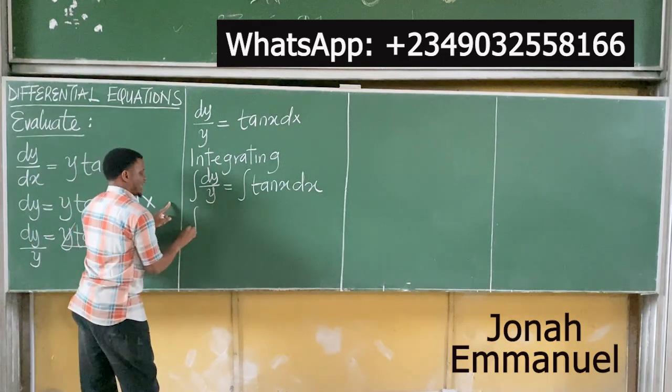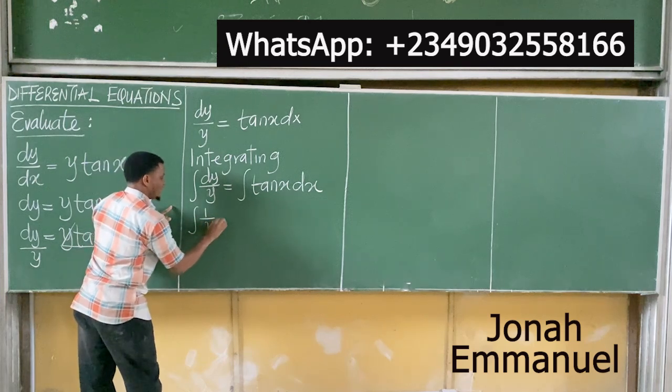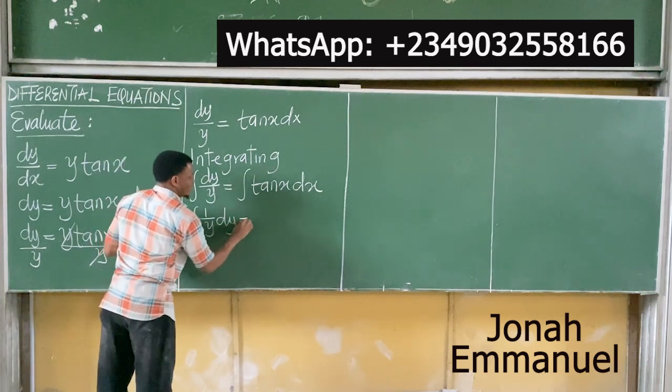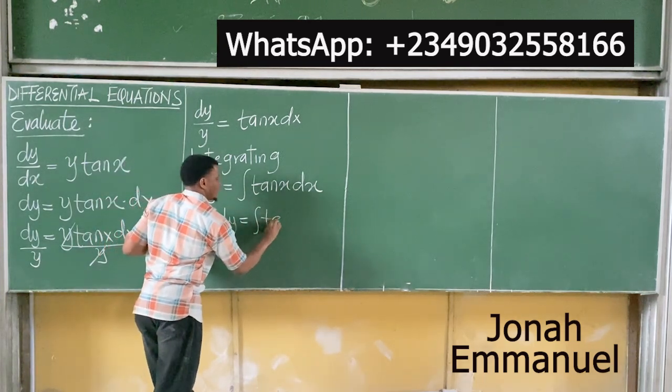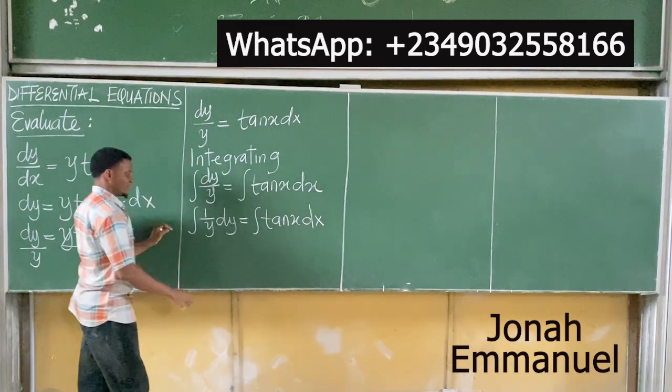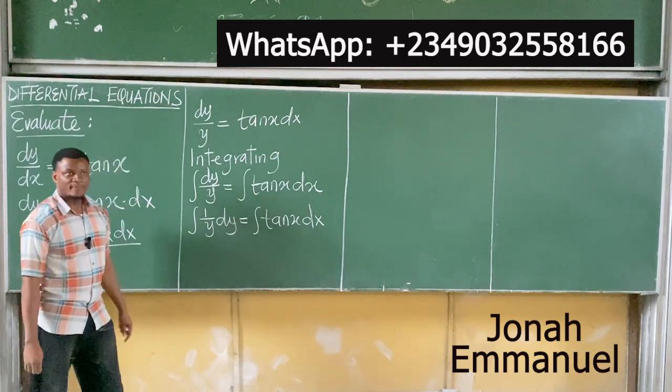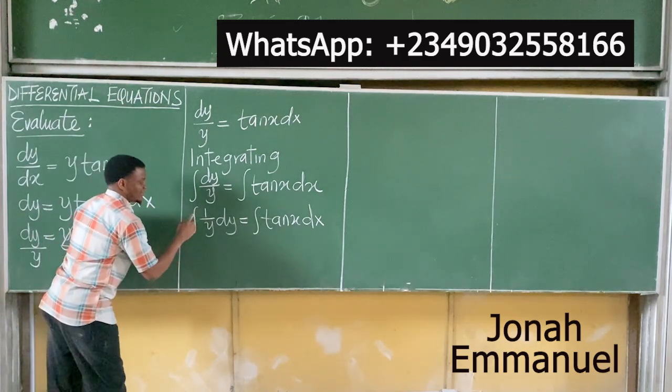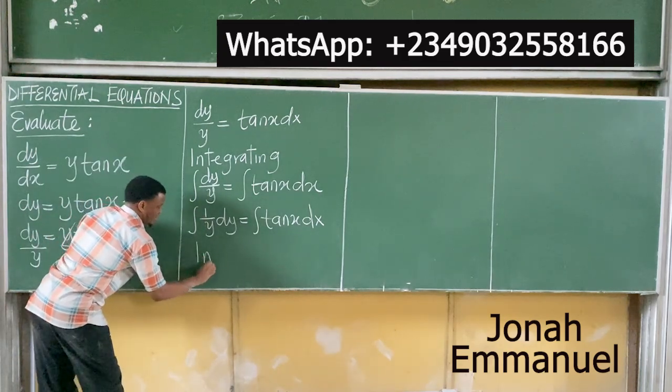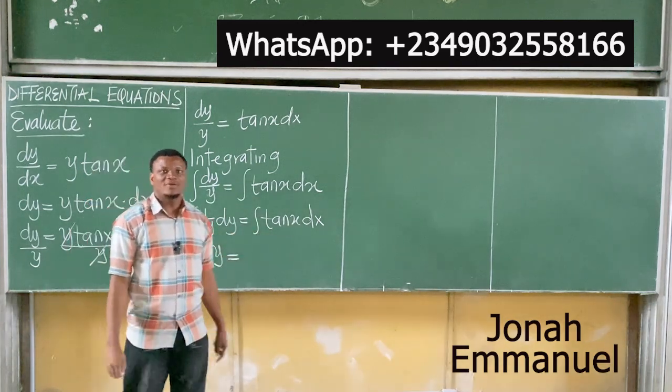This becomes the integral of 1/y*dy is equal to integral of tan(x)*dx. How do you integrate this part? What do you do? If I integrate 1/y, I have ln(y). How do I integrate tan(x)? What's the integral of tan(x)?